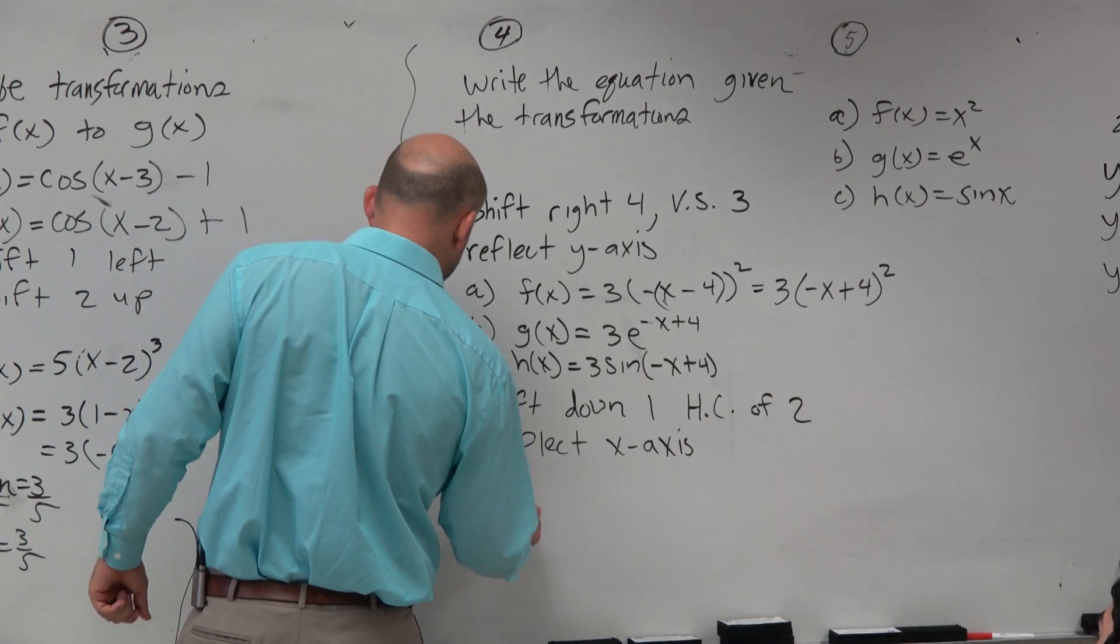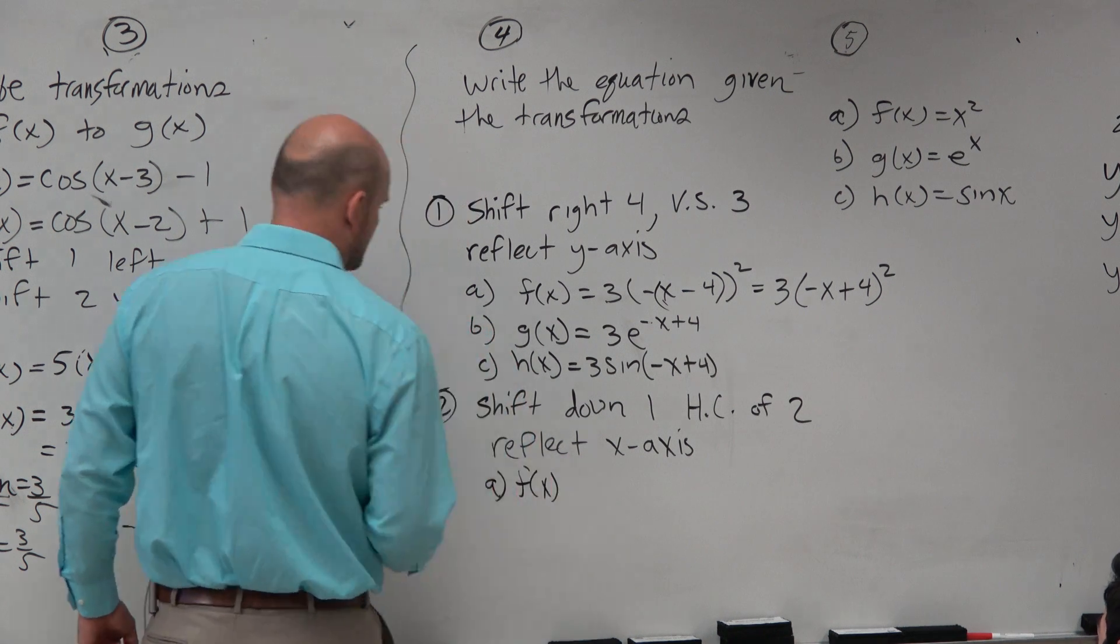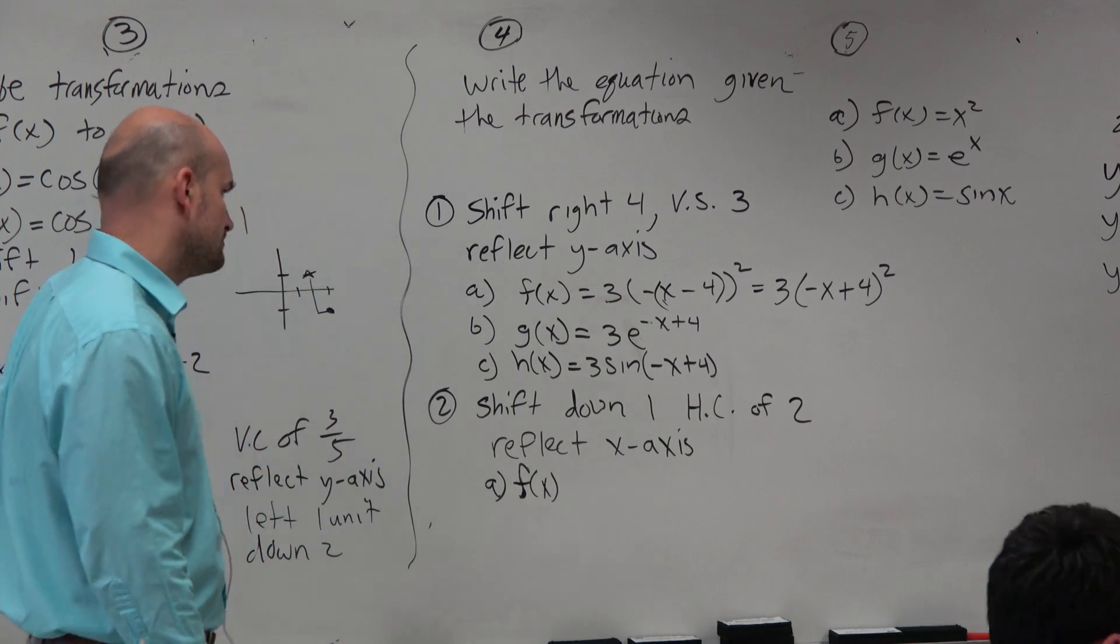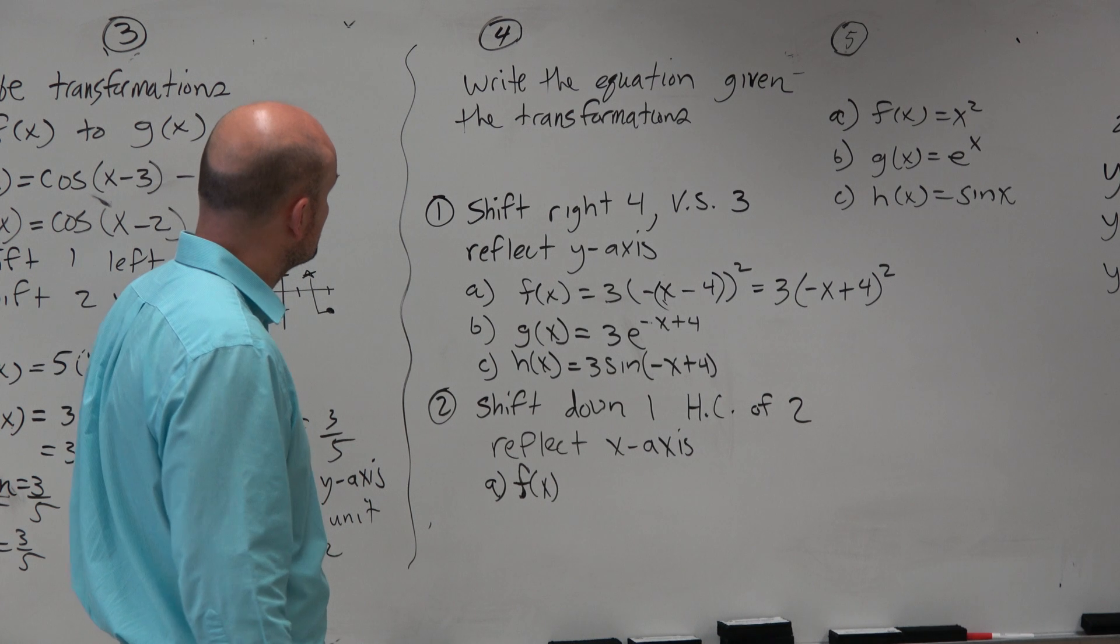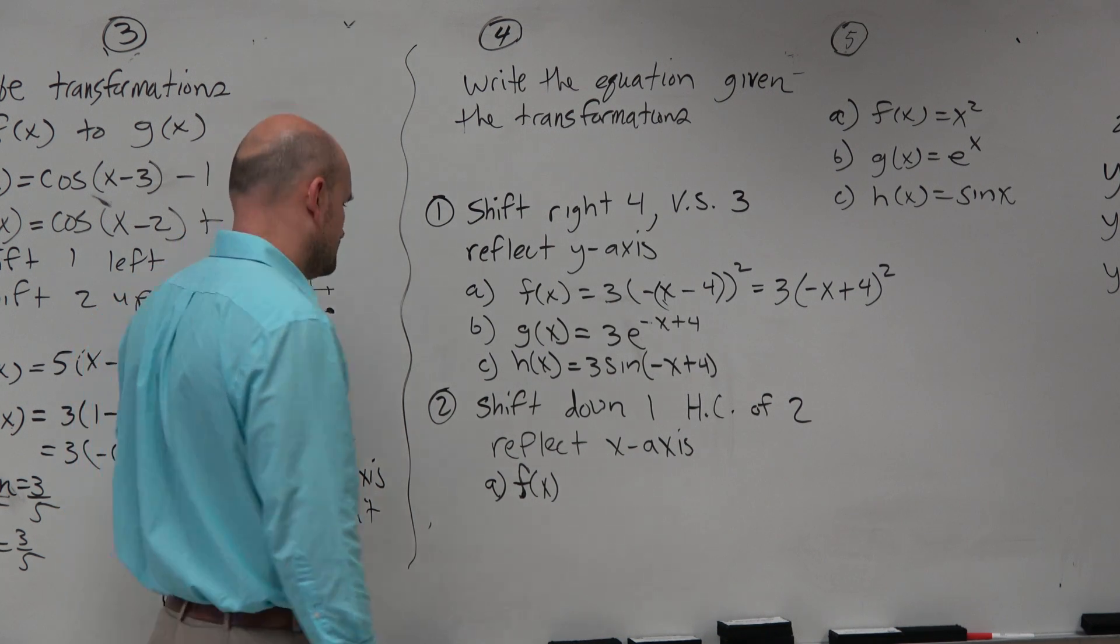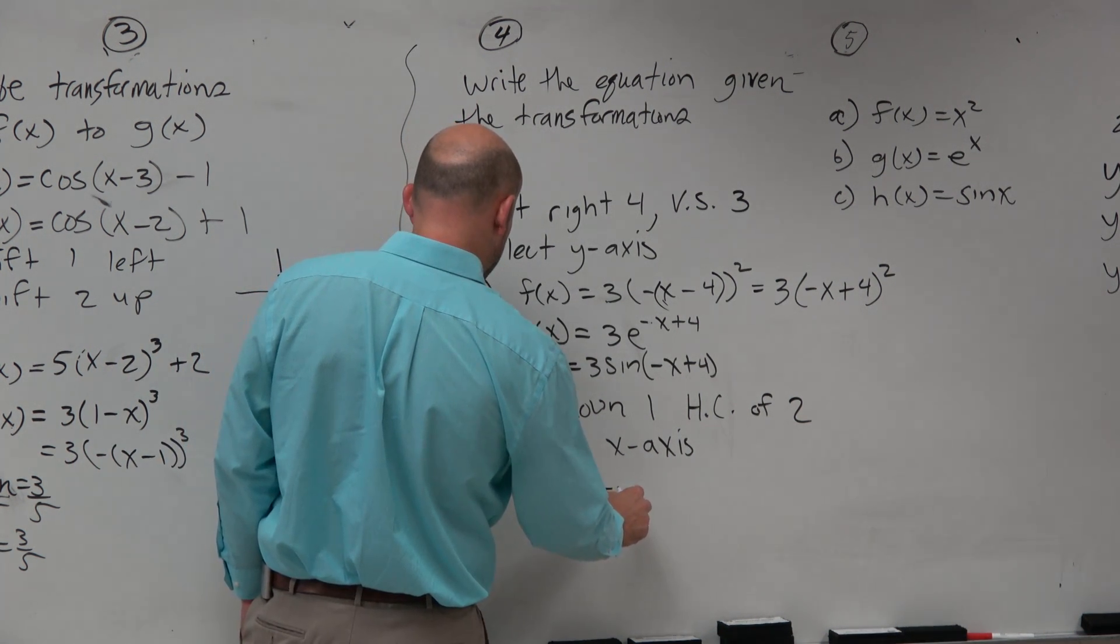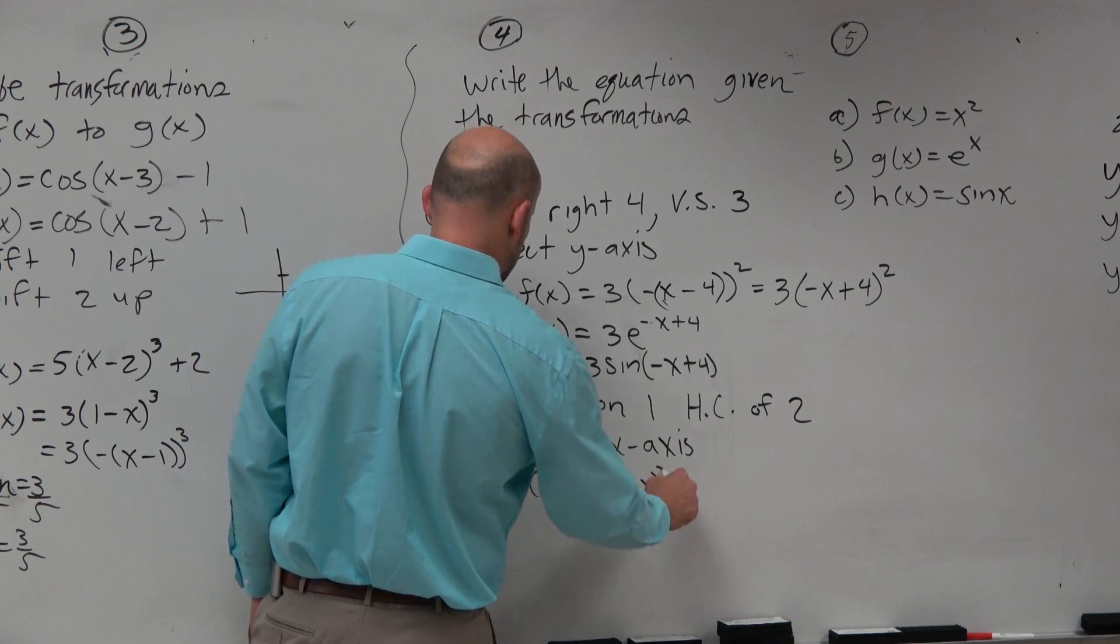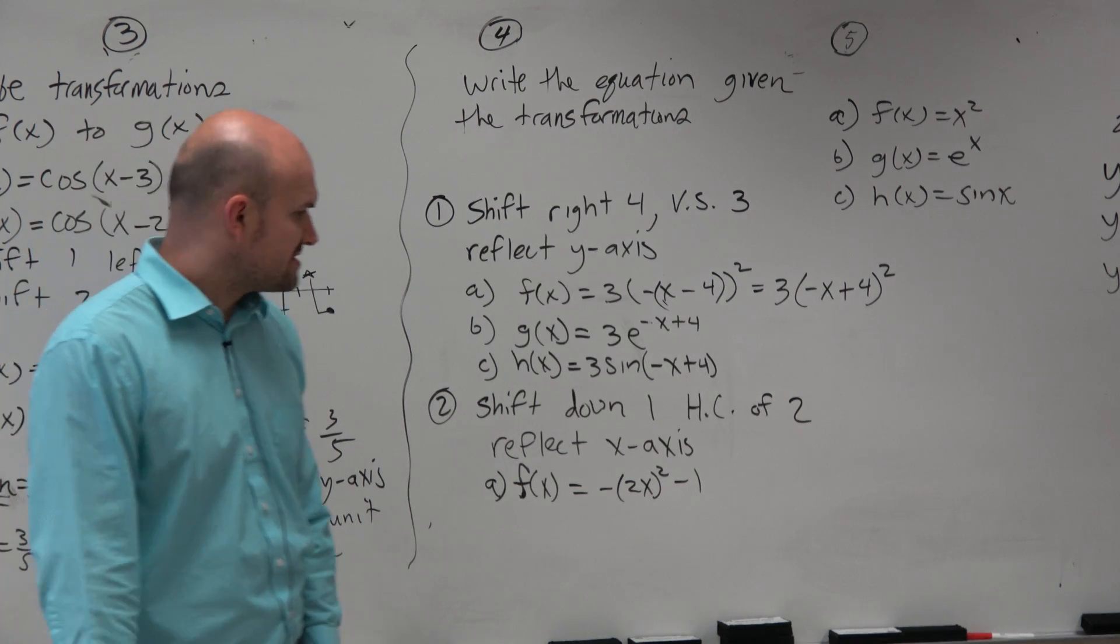So if I was going to do a here, I'd have f of x. That's going to be a negative 2x squared minus 1. There you go. So notice what's outside and what's inside.